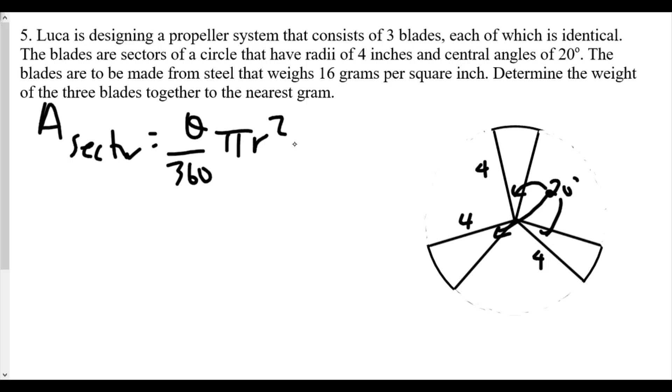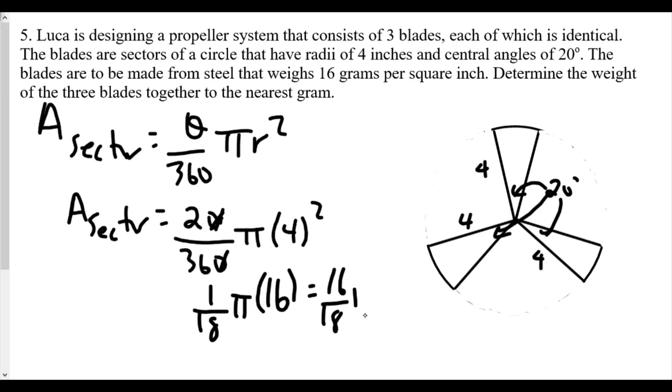And so now what we have in this case is going to be area of a sector is equal to 20 over 360 times π times 4 squared. Now 20 over 360 is going to be, let's see with zeros divided out, and in this case, 2 goes into 36 eighteen times. So we have 1 over 18 times π times 16. And so that becomes 16 over 18π. And that really becomes, in this case, 8 over 9π. Now that's the area of one propeller.